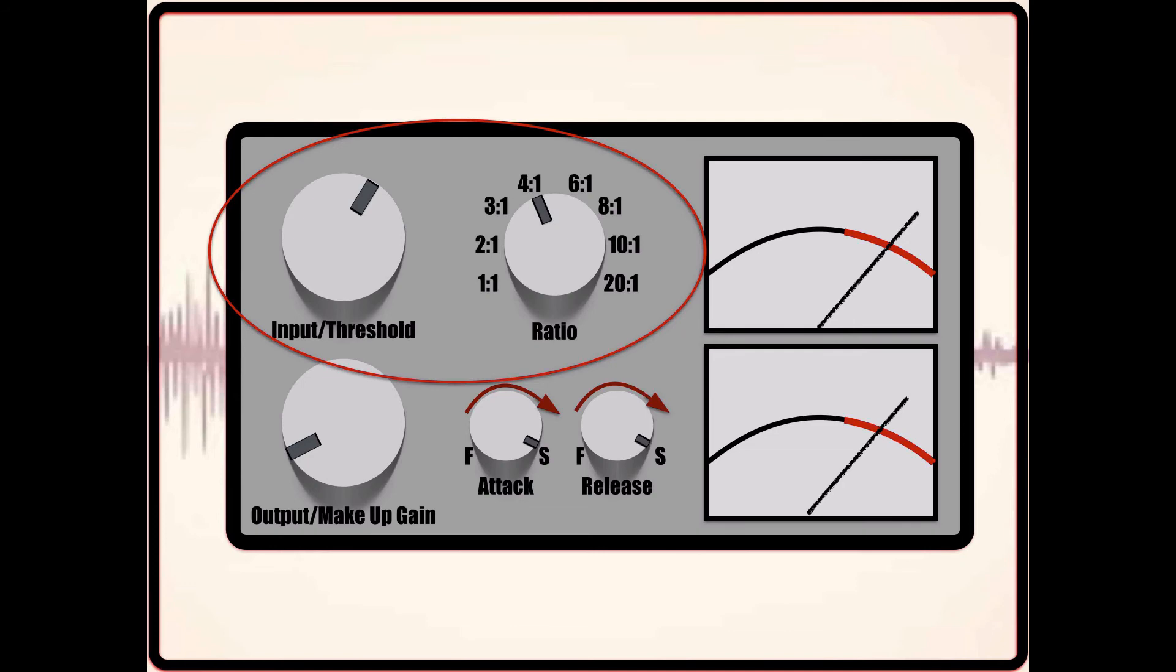Next, place the attack and release controls all the way to the right as to have the slowest attack and release settings available. Now, starting with the attack control, slowly start to turn it counterclockwise until you hear the transient of that sound you are compressing become diminished. This is how you can find the transient of the sound, and from here you can either choose to slow the attack if you want the transient to come through, or speed up the attack if you wanted to compress it more.